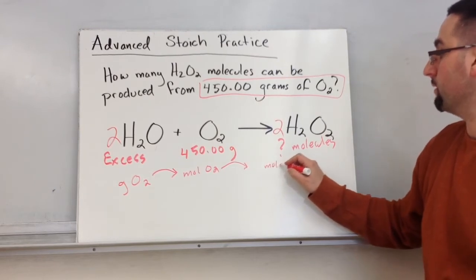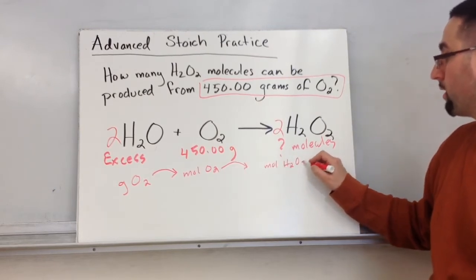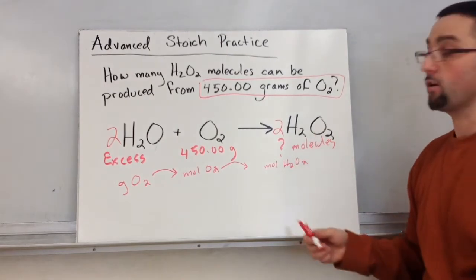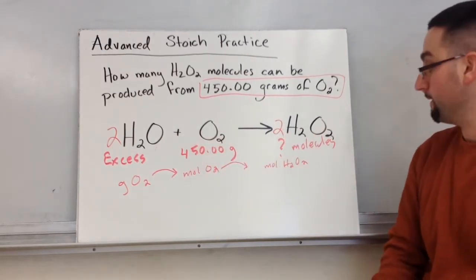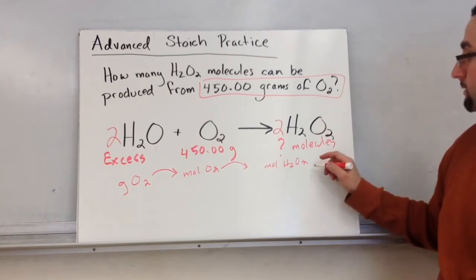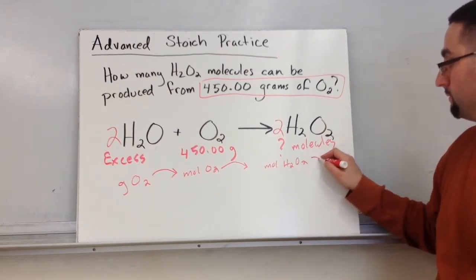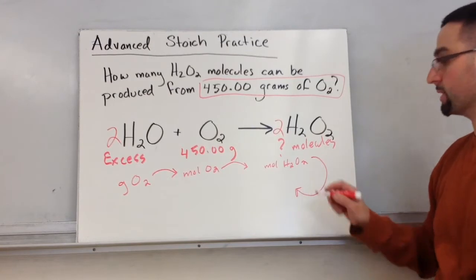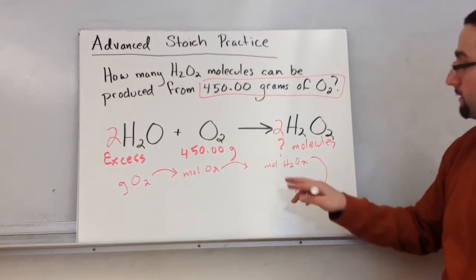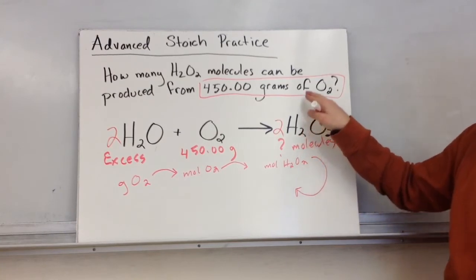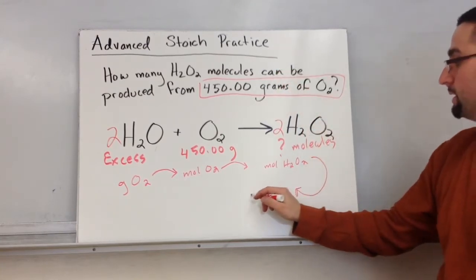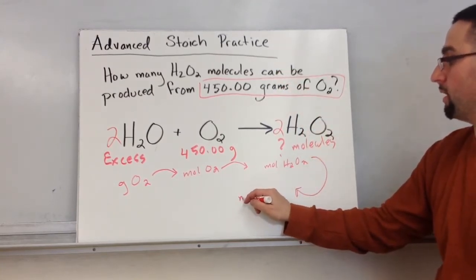Well, the only way that we can compare the moles of O2 to moles of H2O2, our product, is based on our molar ratios, in this case one to two. And then finally, to go from moles of peroxide to molecules, I'm going to have to get moles of peroxide to molecules of H2O2.